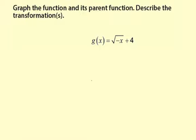Graph the function and its parent function. Describe the transformations. g of x equals the square root of negative x, then plus 4. Looks like this one's a square root function, so the parent function is f of x equals square root x. Let's graph the functions and compare.